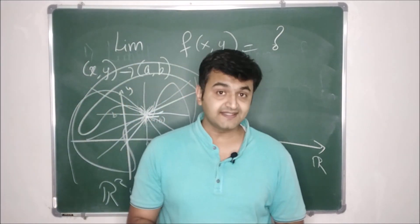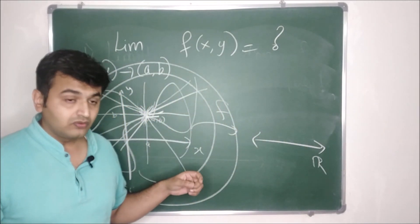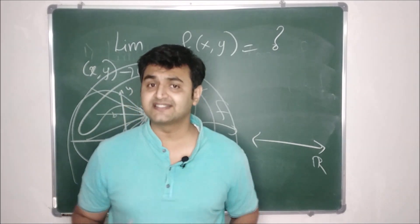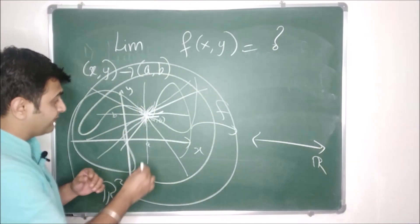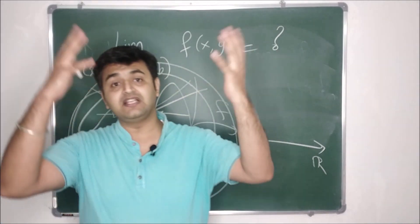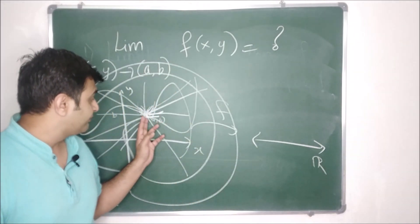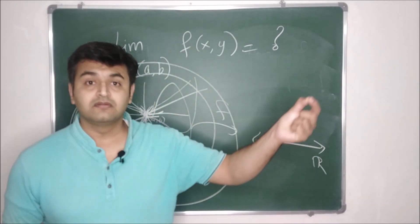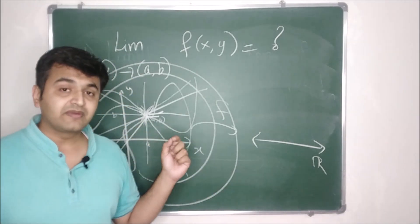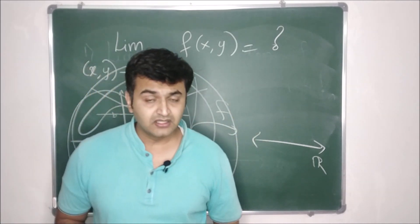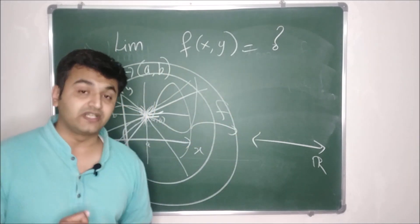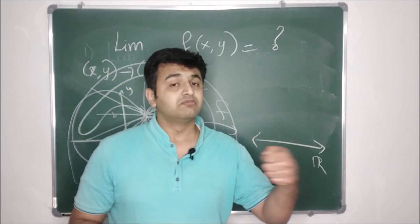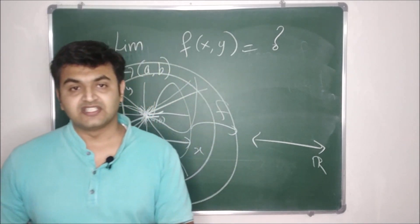If you want to show the limit exists, can choosing paths help you? In one-dimensional space there are only two paths, so checking left equals right is sufficient. But in higher dimensions, even if you approach through 10 million paths and get the same answer, you cannot conclude that is the limit — there might still be another path giving a different answer. So even getting the same answer along billions of paths is not enough to claim the limit exists; you need to use the epsilon-delta definition to prove it.